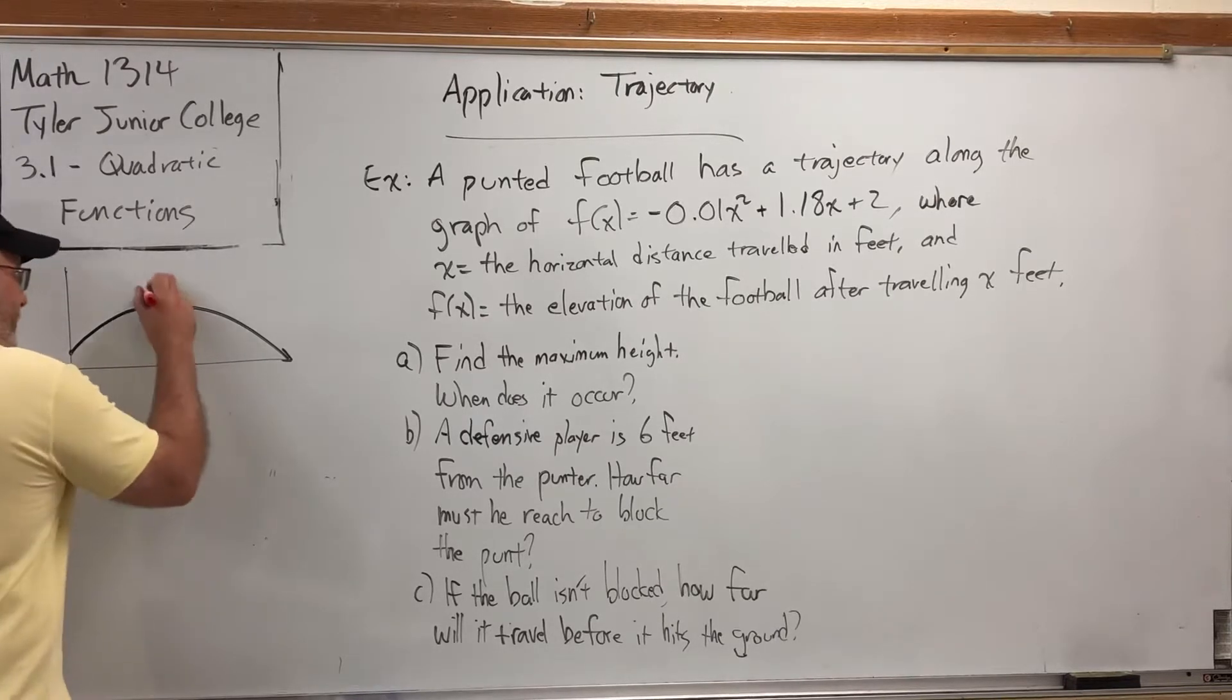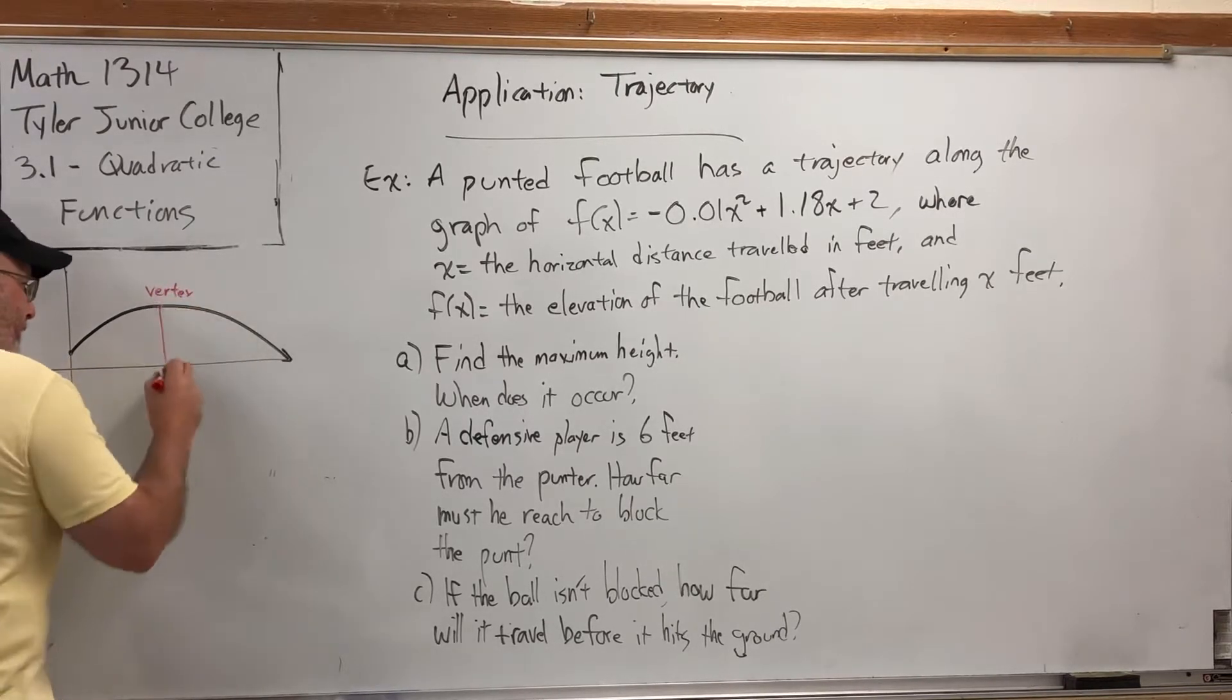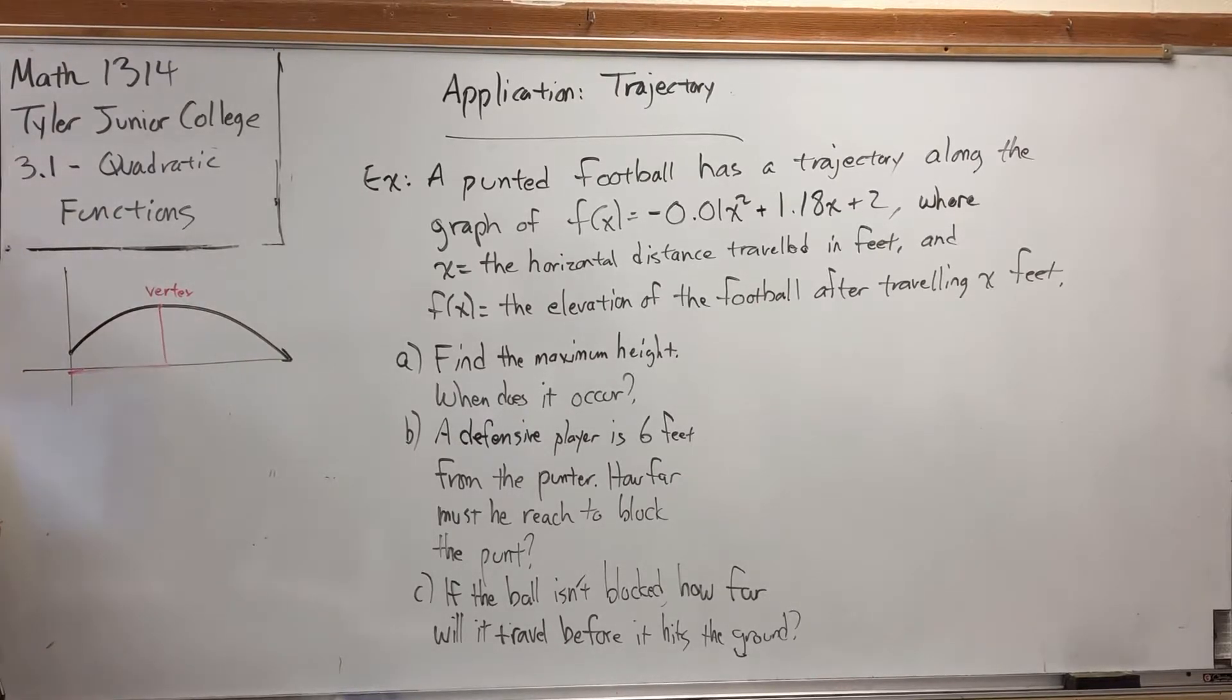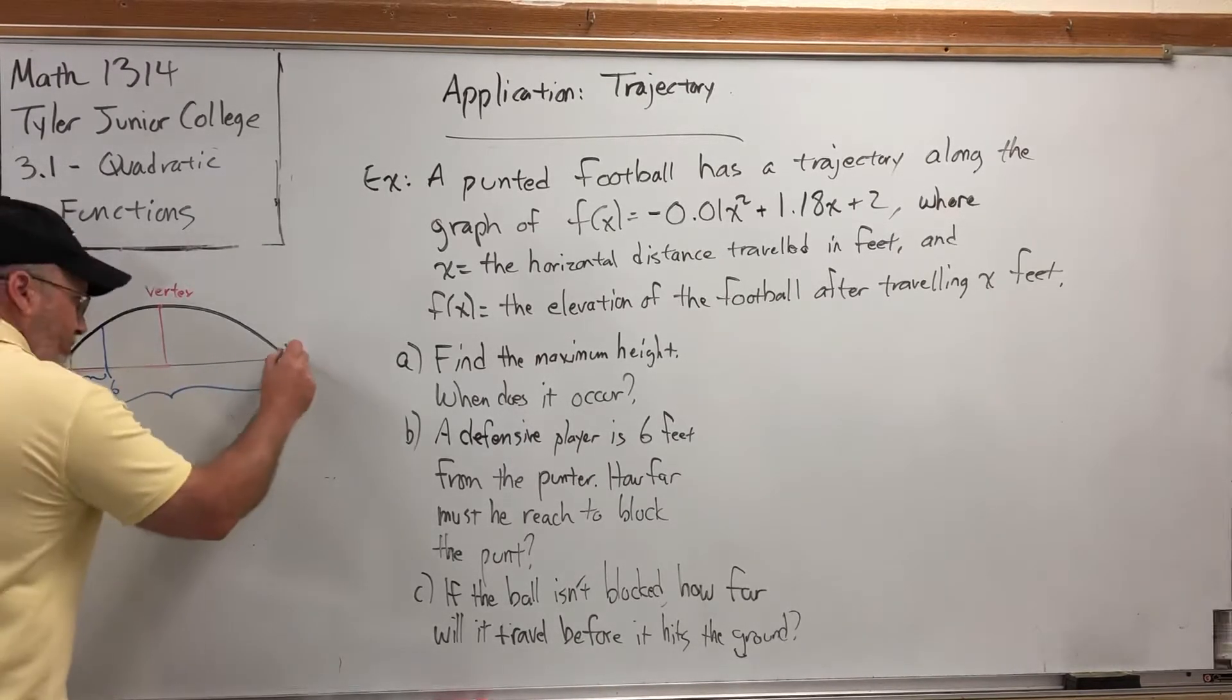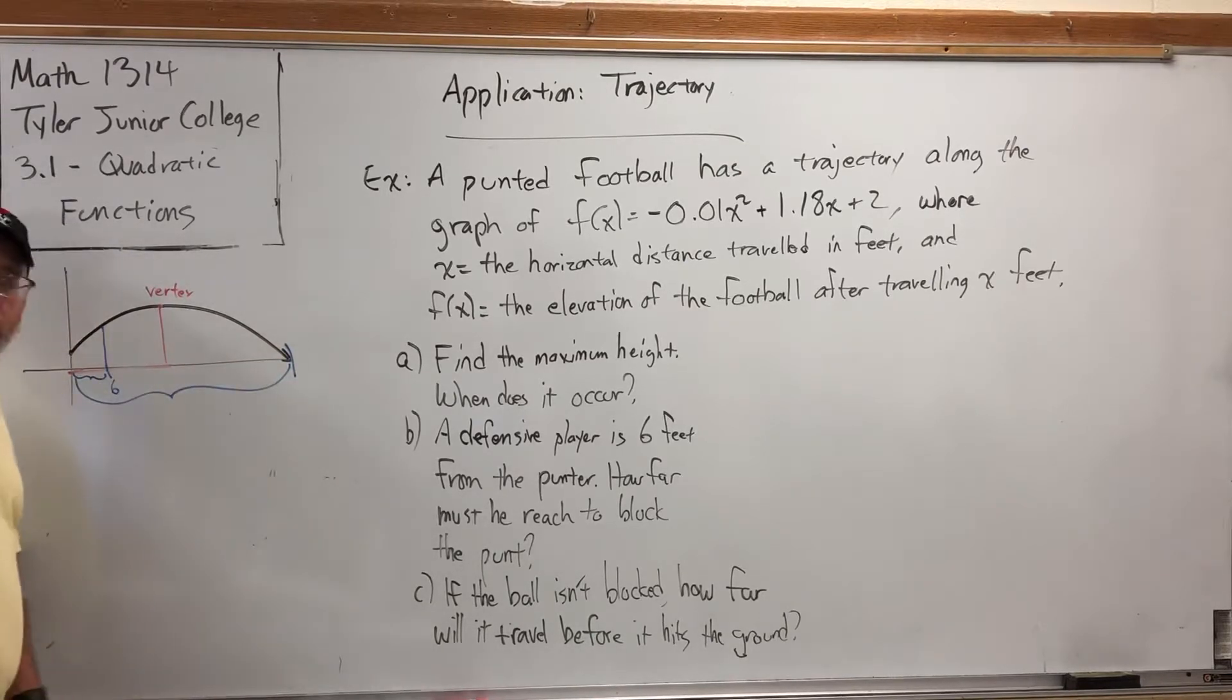The maximum height is clearly going to be at the vertex. So if we can locate the vertex, we can answer two questions: the highest height, the maximum height obtained, and how far it traveled horizontally once it reached that height. For the defensive player problem, we have to think a little bit more. But it's saying there's a defensive player 6 feet from the punter. And the question is, how far must he reach to block the punt? Assuming he reaches vertically. That's equivalent to asking, how far in the air is the ball after it's traveled 6 feet horizontally? That's easy. Just stick 6 into the function. As far as if the ball isn't blocked, how far will it travel before it hits the ground? The answer to that is how far this is. But if we know the coordinates of this point, the x-coordinate will tell me how far it is. And that's an x-intercept.